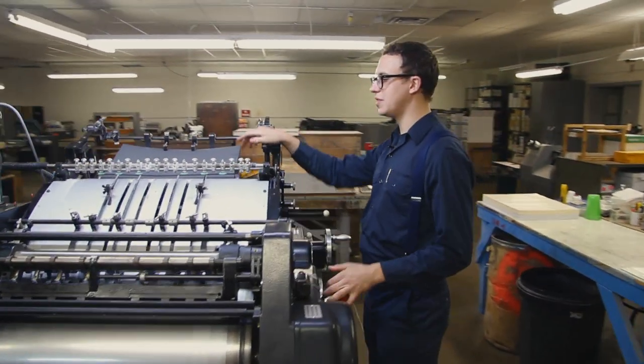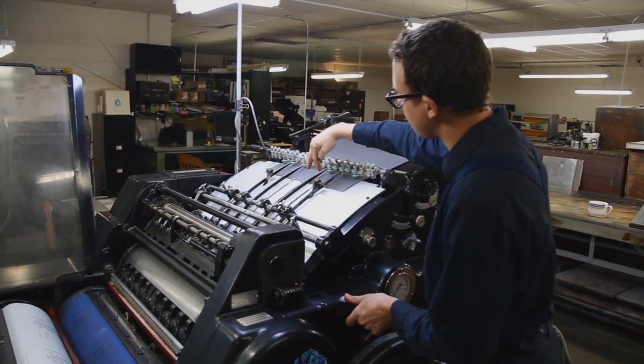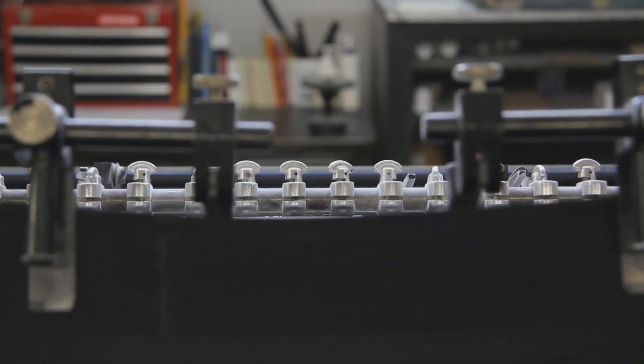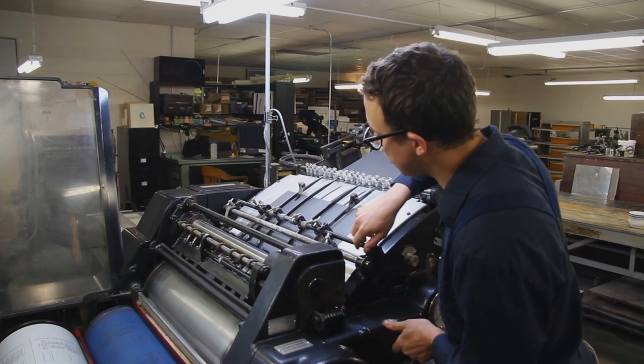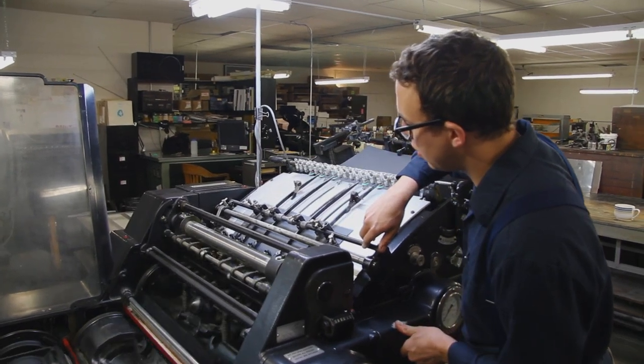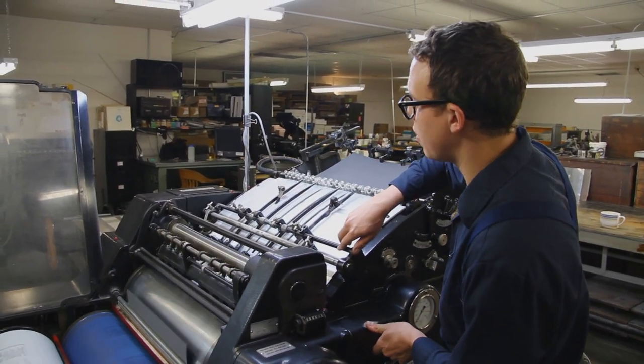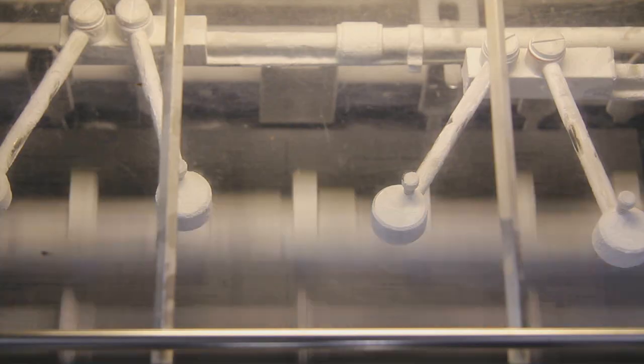So the paper feed is up here. These fingers pick it up and bring it down into the head stops, and this allows registration, and the side guide will push it over and take it down through the cylinder, which comes out, delivers out the back side.